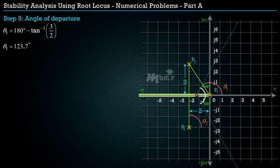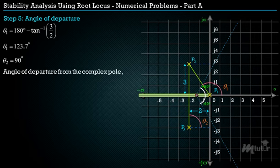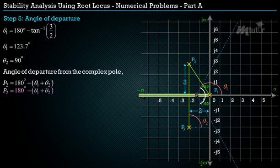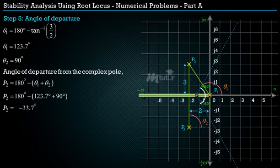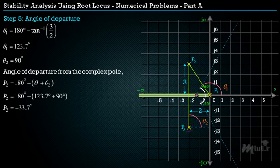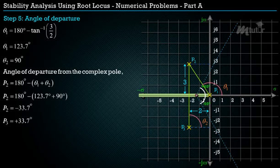From the graph, θ2 = 90°. Using θ1 and θ2, the angle of departure from complex pole P2 = 180° − (θ1 + θ2) = 180° − (123.7° + 90°) = −33.7°. The angle of departure at P3 is the negative of that at P2, so it equals +33.7°.